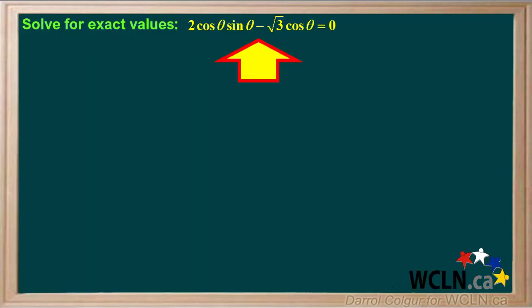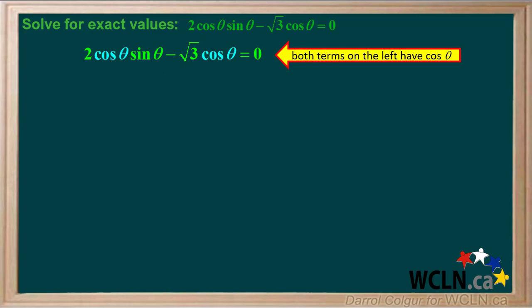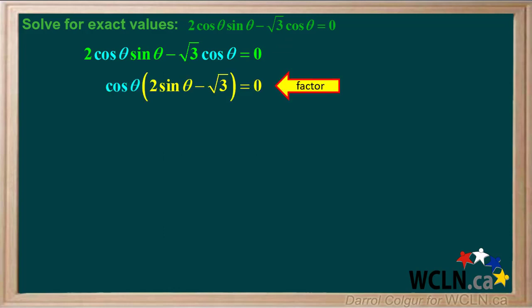We're asked to solve this equation for exact values and determine the values for angle theta. We see that both terms on the left side have cosine theta, so we can factor the equation and we get cosine theta times 2 sine theta minus root 3 in brackets, equals 0.